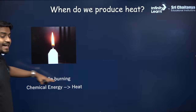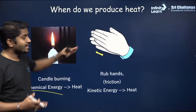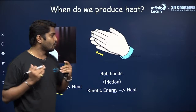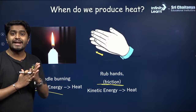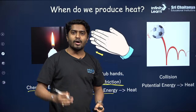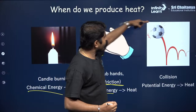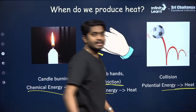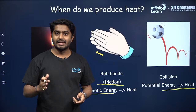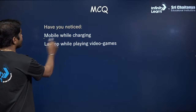Now, how do we produce heat? A candle converts chemical energy into heat. Rubbing your hands converts kinetic energy into heat through friction. A football thrown into the air converts potential energy to kinetic energy, and finally all of it converts into heat when it settles. These are different ways to convert energy into heat. But how do we convert electrical energy into heat?